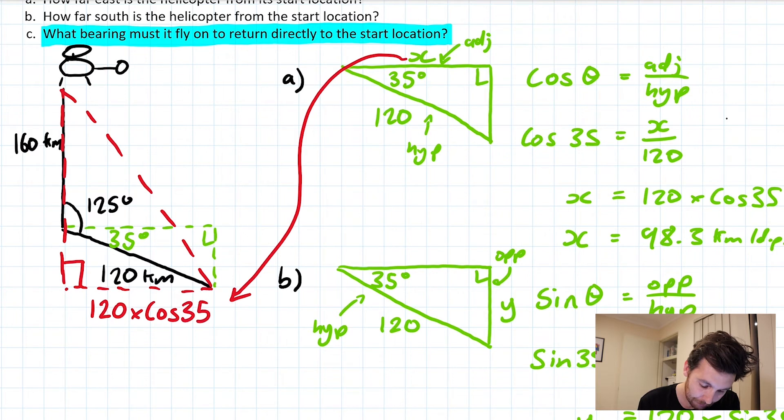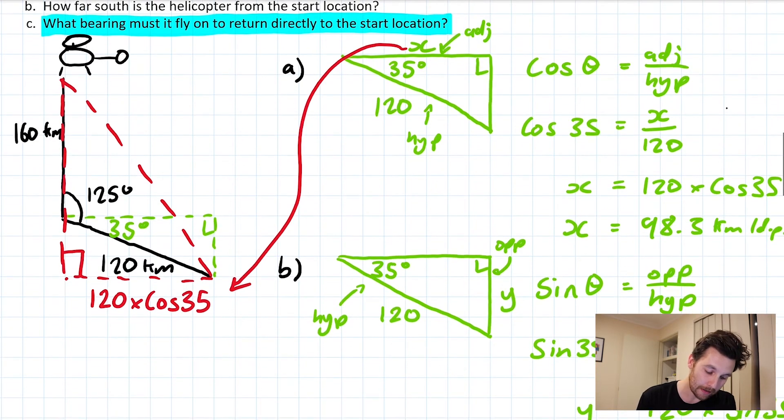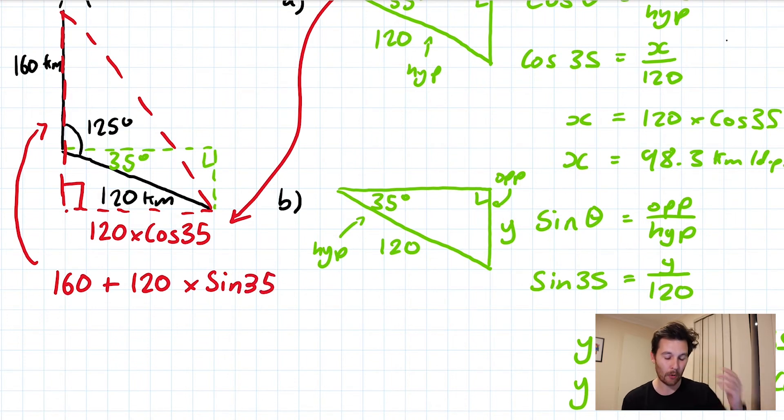So what I would insist that you would do instead is, instead of calling this side 98.3 km, we're going to use the exact value, which is 120 × cos 35°. Now, with a sense of inevitability, we can do the same thing by using our answer to B for this one. Our other side length is going to be a little bit different because for this one we're going to have to take the 160 and add it on to our exact value answer, which is going to be 120 × sin 35°, because that's the exact value form of it. Because we're interested in accuracy, that's what we're going to use.